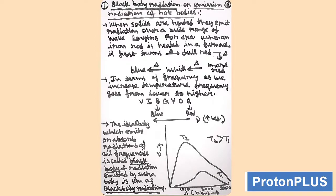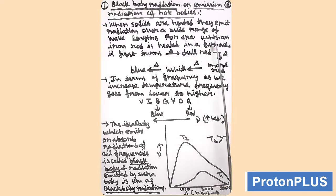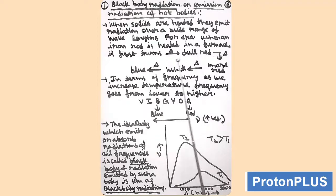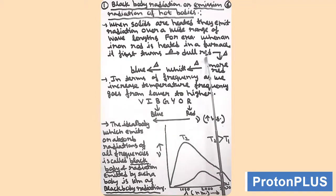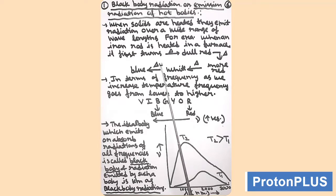First, we will take black body radiation or emission of radiation from hot bodies. When solids are heated, they emit radiation over a wide range of wavelengths. For example, if we take an iron rod and heat it in a furnace, first it will turn to dull red. While we are continuously heating it, it will turn more and more red, ultimately change to white, and then further heating will change it to blue.